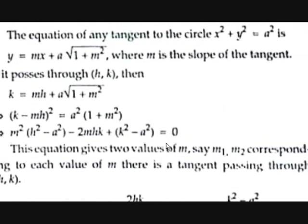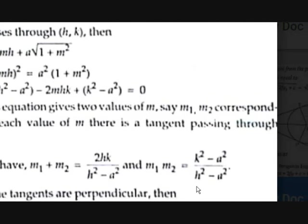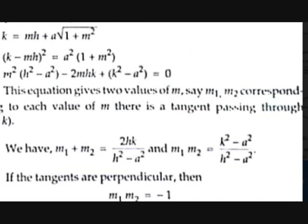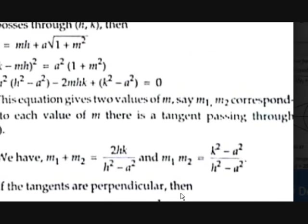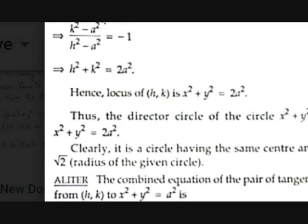From the quadratic equation, by Vieta's formulas: m1+m2 = 2hk/(h²−a²) and m1·m2 = (k²−a²)/(h²−a²). Since the tangents are perpendicular, m1·m2 = −1. Therefore (k²−a²)/(h²−a²) = −1.